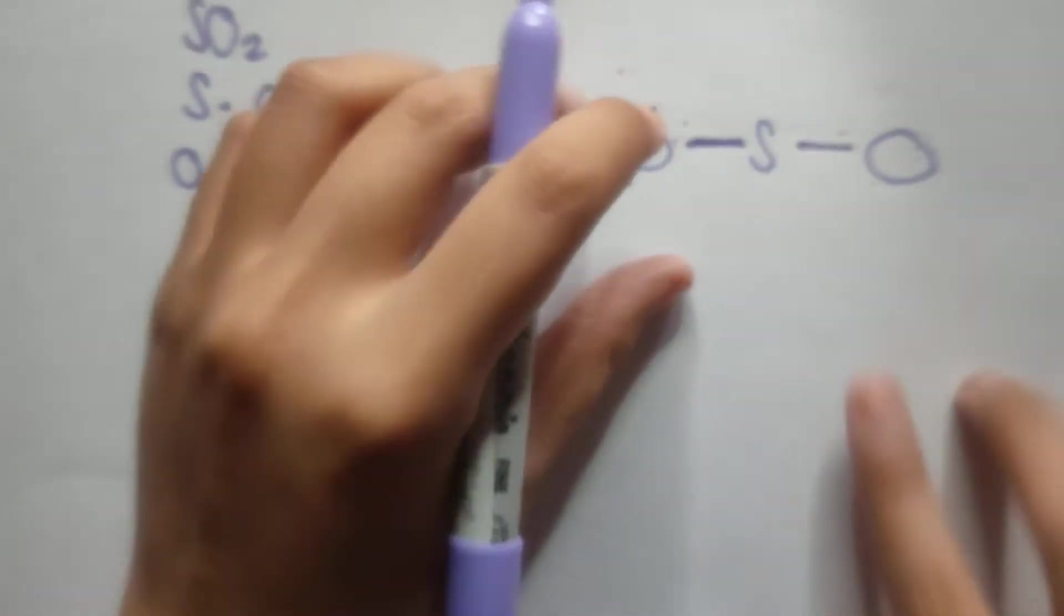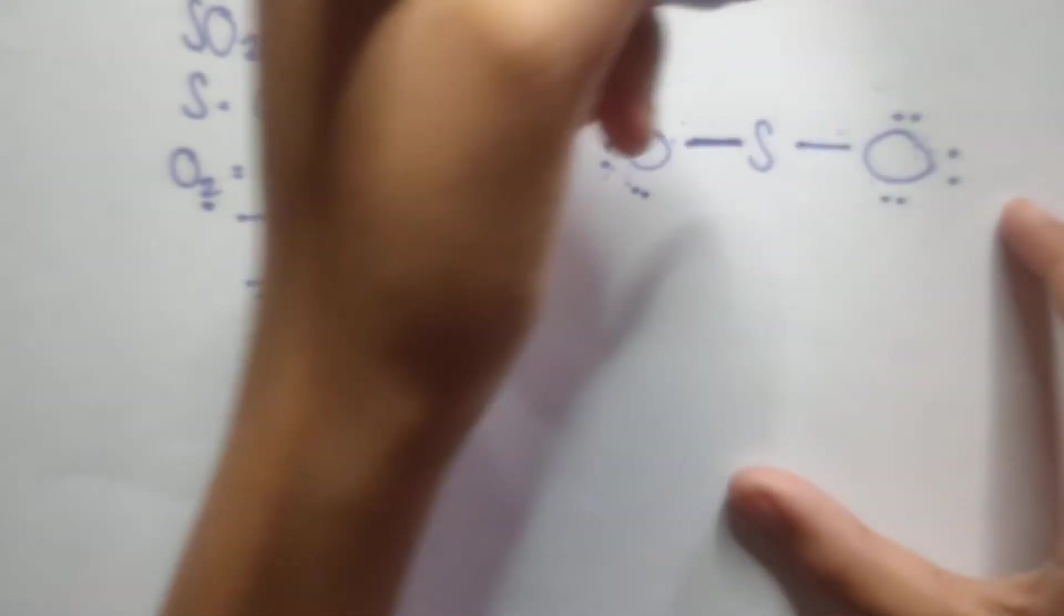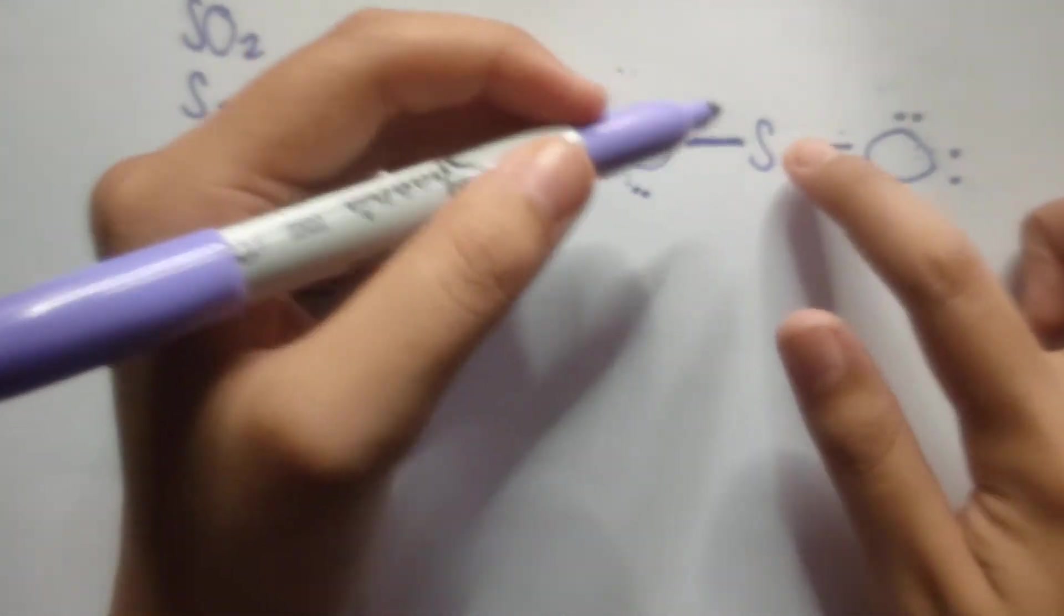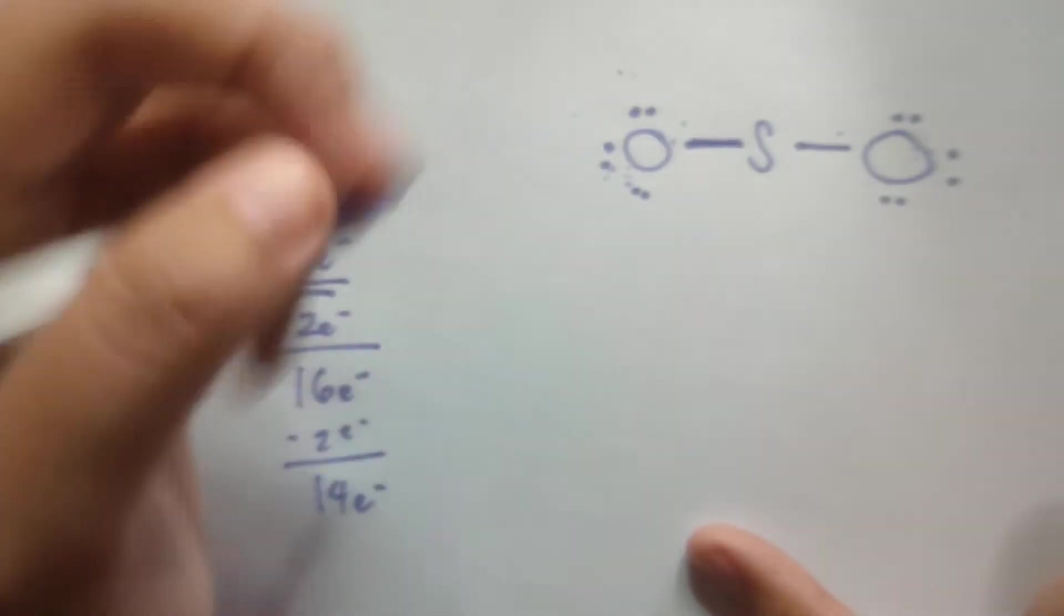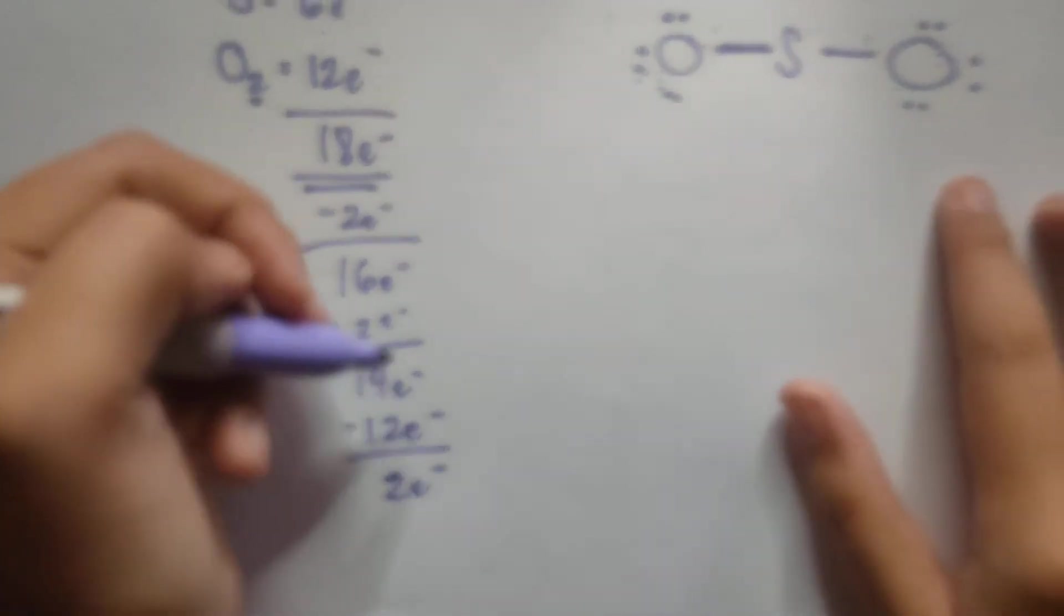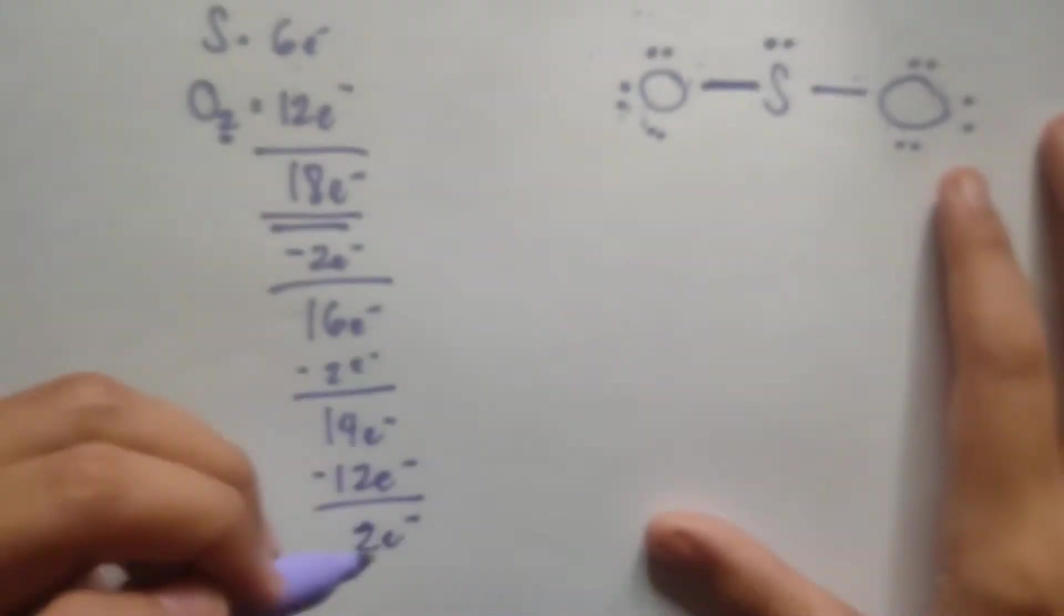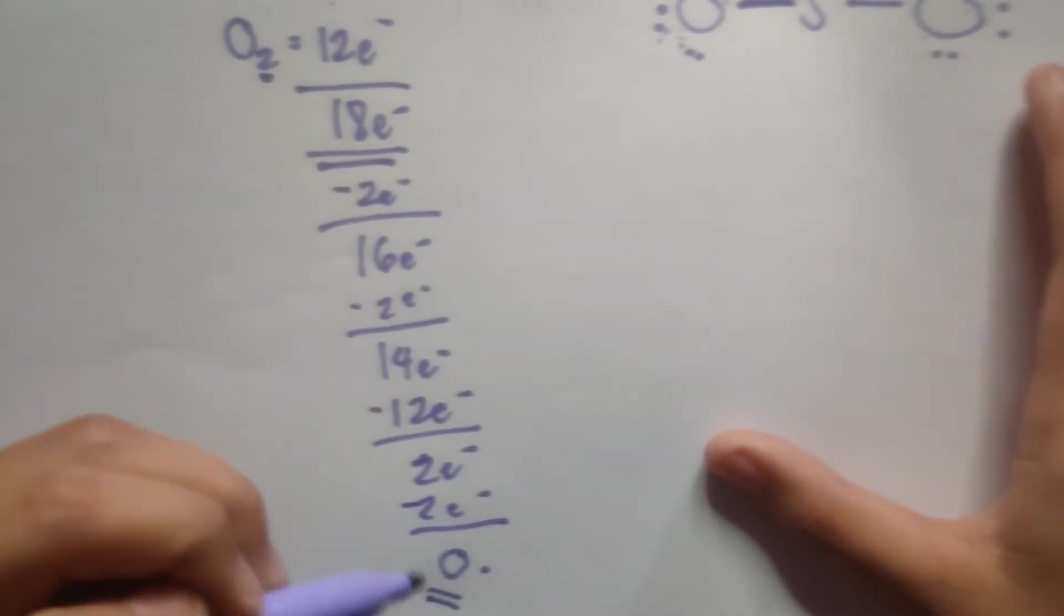So after which, let's try to distribute the electrons around the adjacent structures. It's important as a rule of thumb to distribute it to the outside structures, then going inwards. So you have 1, 2, 3, 4, 5, 6, 7, 8, 9, 10, 11, 12. So we have 12 electrons. So we only have 2 electrons left, after which we distribute that to the central atom. So we added 2 electrons there. So all in all, we have 0 electrons left.